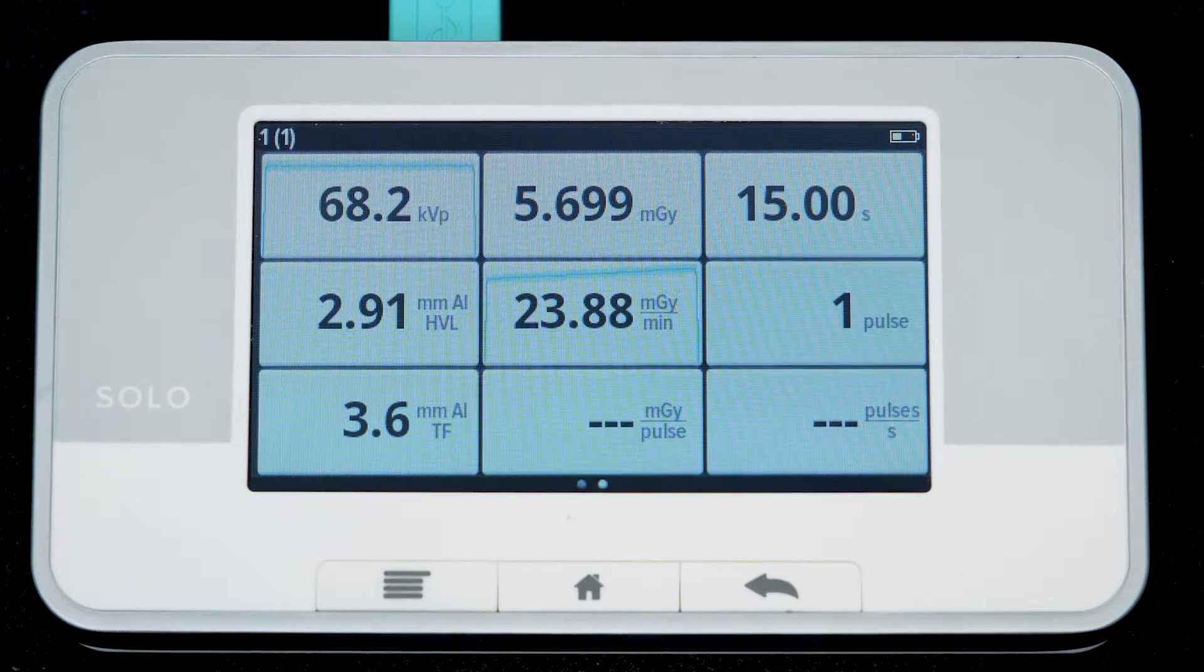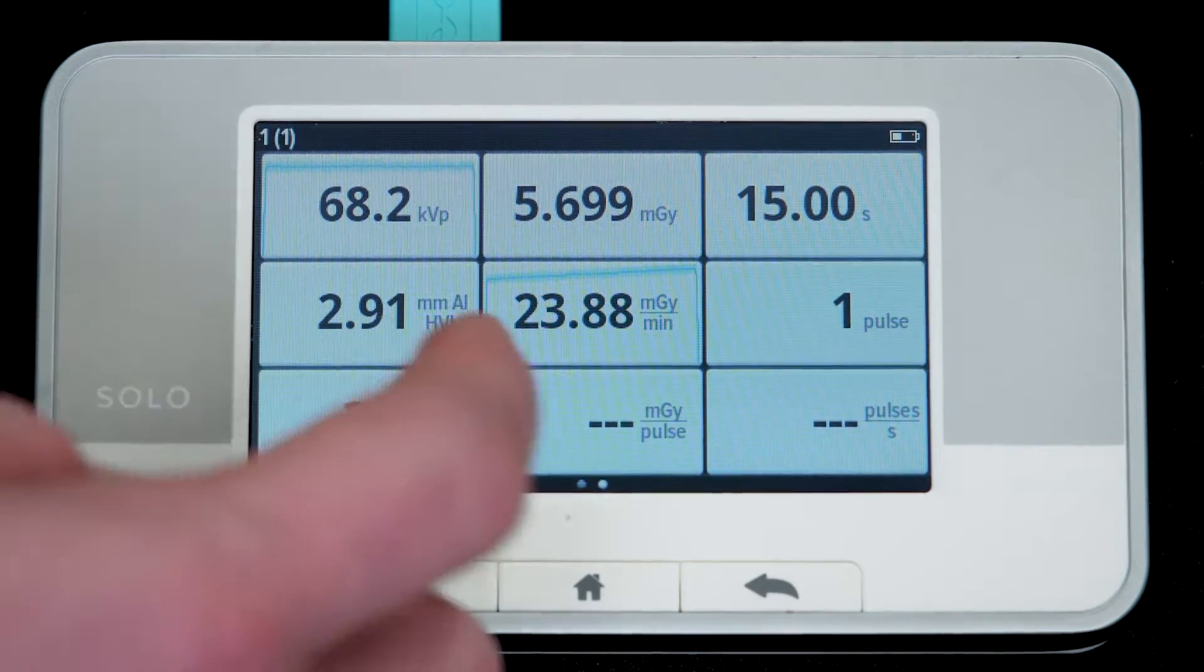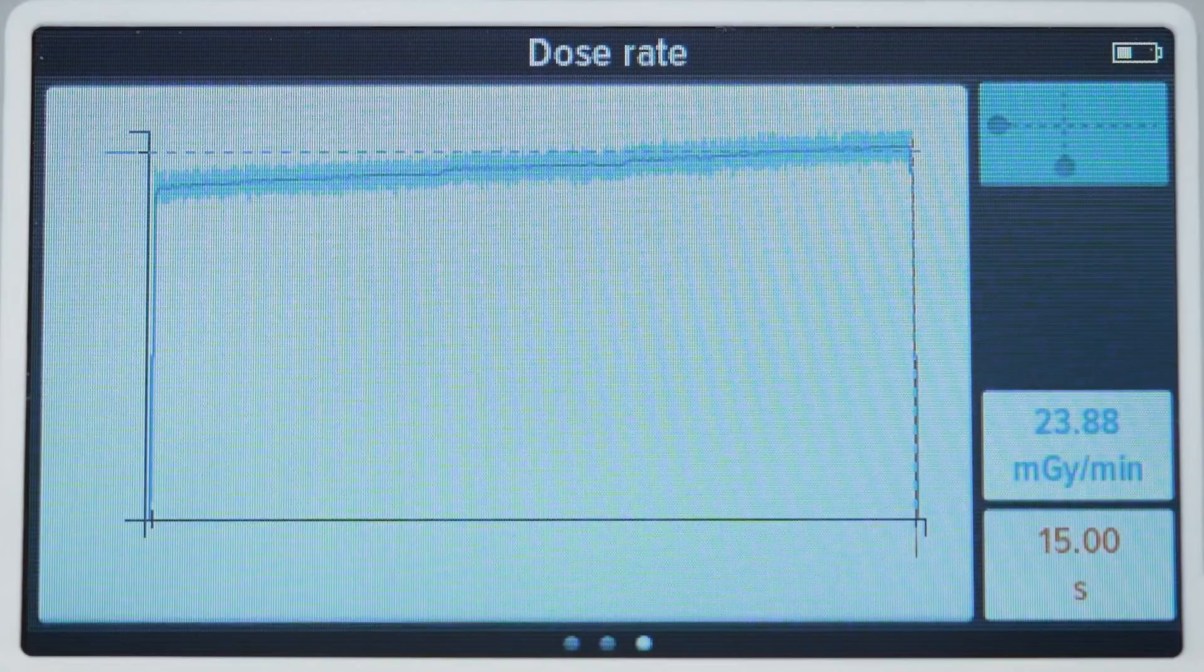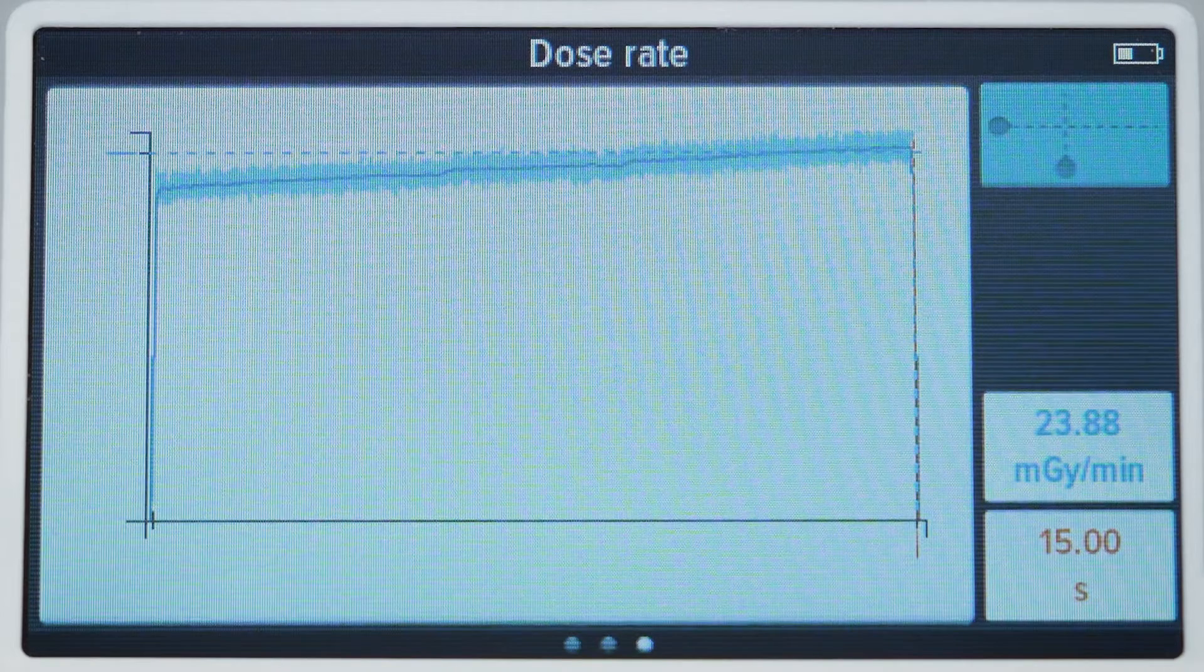On some machines, the dose rate can be an indication of the position. The dose rate value is found under the dose value on the base unit. Tap it and swipe left to see the waveform. You can see that it is leaning slightly, which is another indicator that the sensor is not perfectly centered in the X-ray beam.